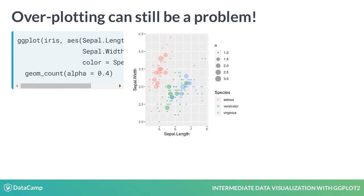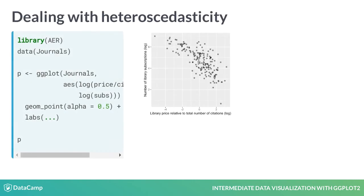A typical case for using quantile regression is when you have heteroscedasticity — that is, the variance across a predicted variable is not consistent, in which case linear models may not be valid. Here's an example of heteroscedasticity from a dataset of economics journals from the AER package. You can see that the variance on the y-axis is not consistent as we move along the x-axis.